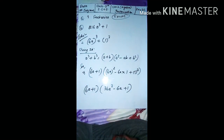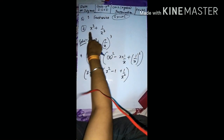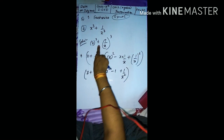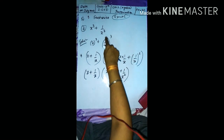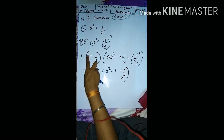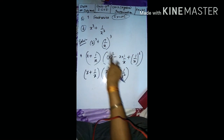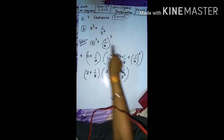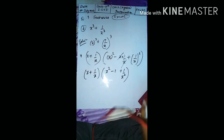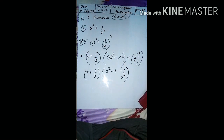For part (d): x³ + 1/x³. Write this as x³ + (1/x)³, which is a³ + b³ with a = x and b = 1/x. Applying the identity: (x + 1/x)(x² − x·(1/x) + 1/x²) = (x + 1/x)(x² − 1 + 1/x²). The x and 1/x cancel to give 1, so this is the final answer.